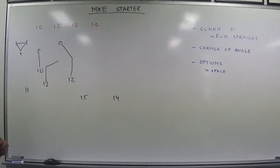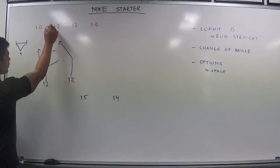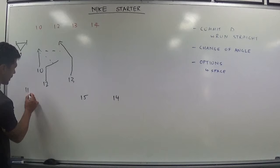So with our 9th option here, obviously the 10 goes up, he either plays 13 short if that door opens or he plays 12 out the back. We have an option for 11 to come around.